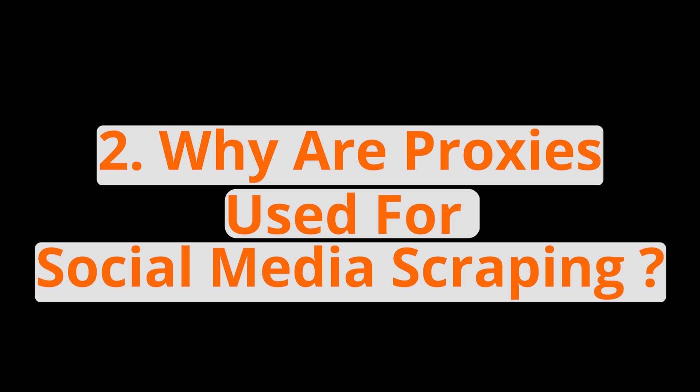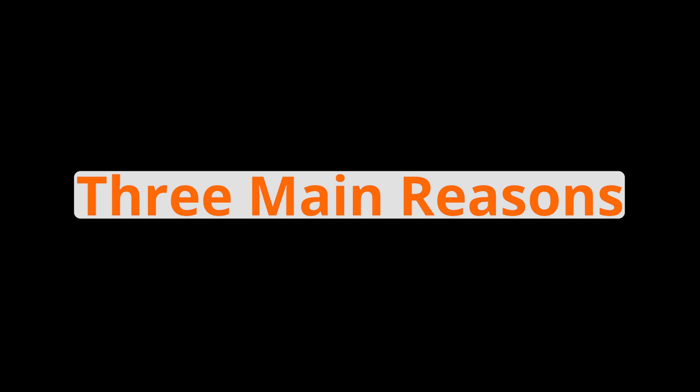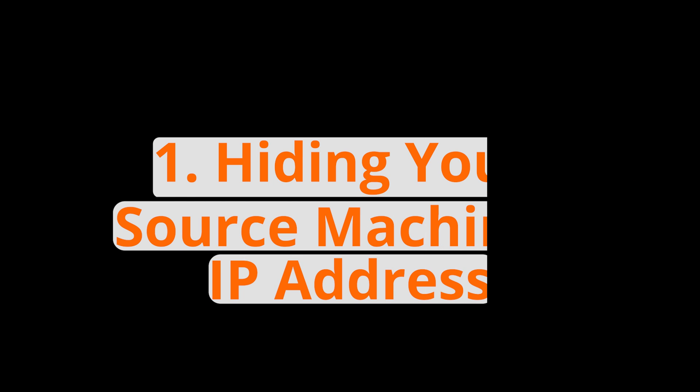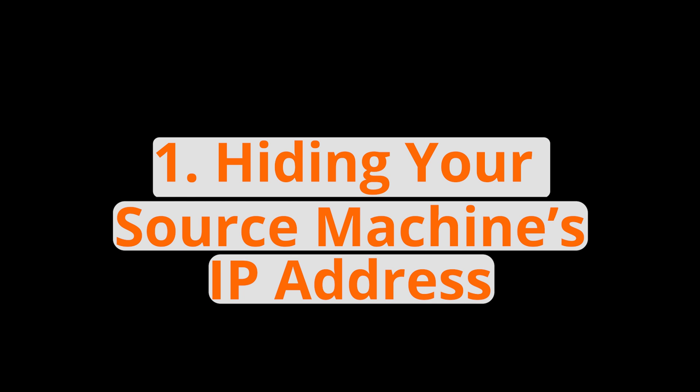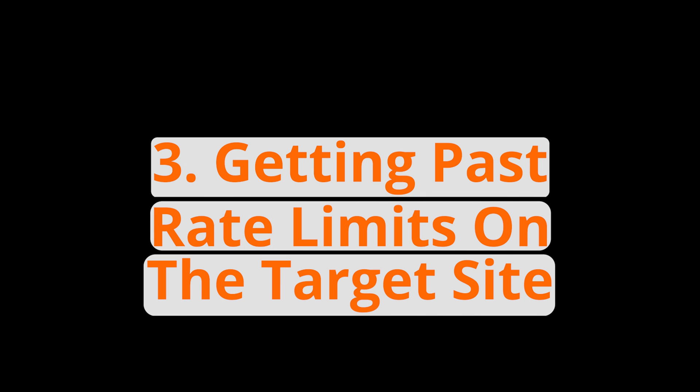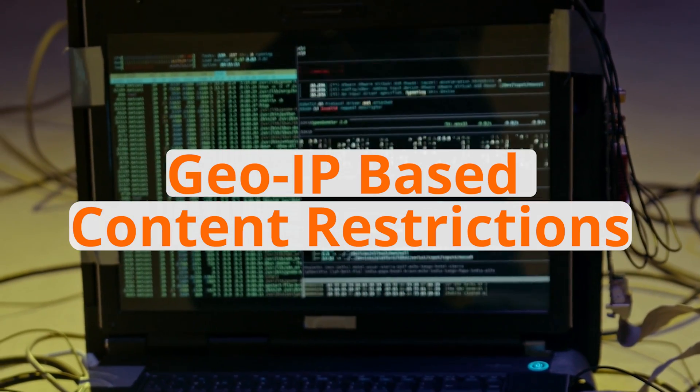Why are proxies used for social media scraping? There are three main reasons. First, hiding your source machine's IP address. Second, counter geo-blocking. Third, getting past rate limits on the target site. The main benefit is to hide your original web scraping machine's IP address so your identity is absolutely secure. Another benefit is to get around geo-IP-based content restrictions — like if you want to scrape the US Apple App Store from India, you can access it through a US-based proxy server.